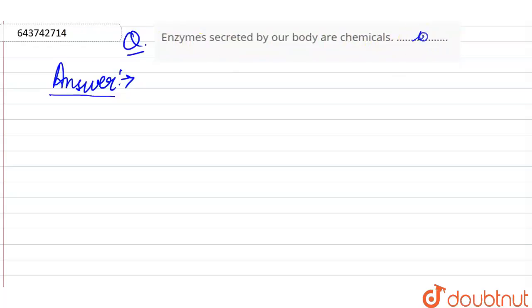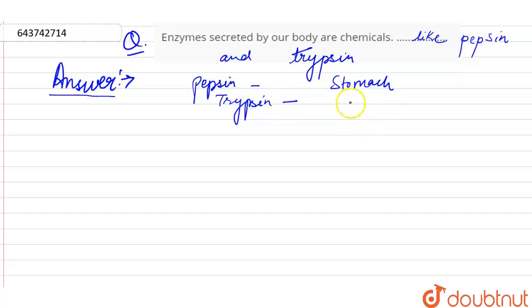chemicals like pepsin and trypsin. Pepsin is secreted by the stomach and trypsin is secreted by the pancreas.